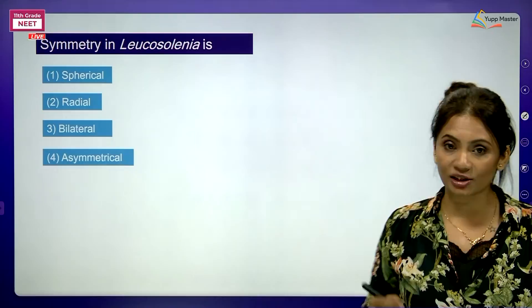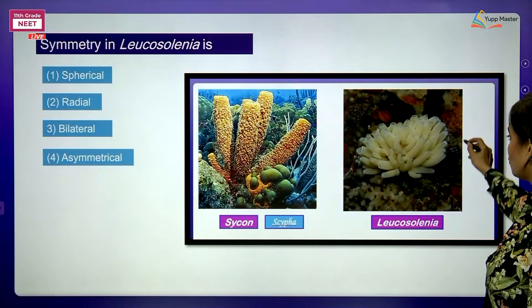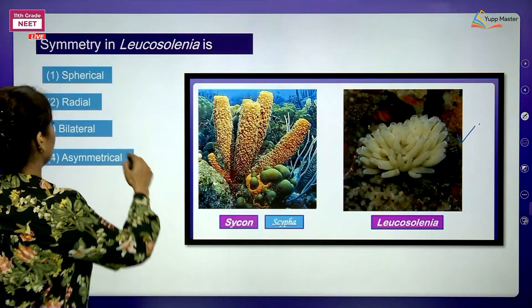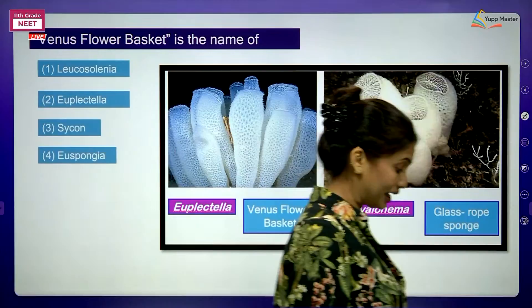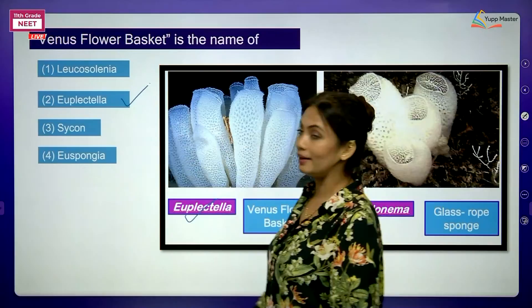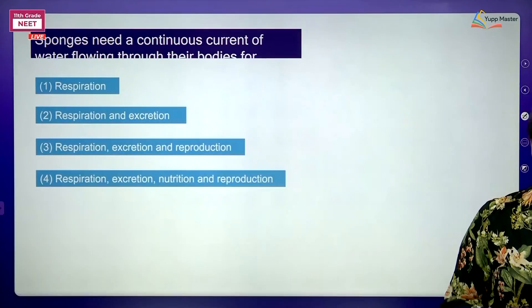Symmetry in Leucosolenia - I told you very particularly that Leucosolenia is the sponge which is radially symmetrical. So the symmetry found in Leucosolenia is radial symmetry. Next: the Venus Flower Basket - it is the common name for Euplectella. And Hyalonema is the glass rope sponge. Next: sponges need a continuous current of water through their bodies - the water canal system with ostia, spongocoel, osculum, and choanocytes working inside helps in respiration, excretion, and nutrition.